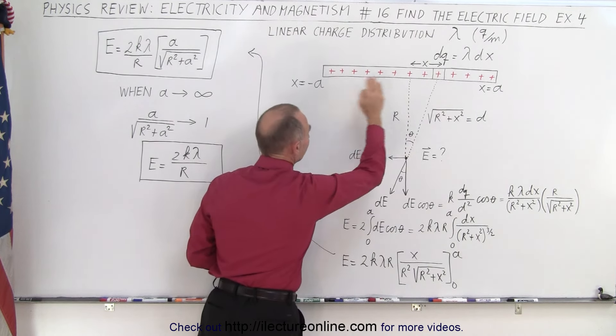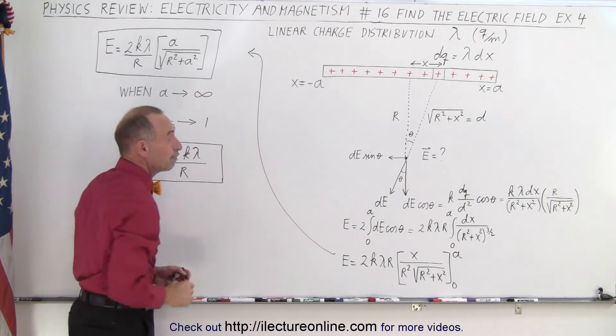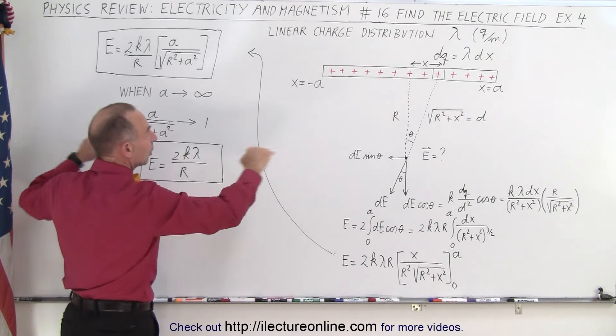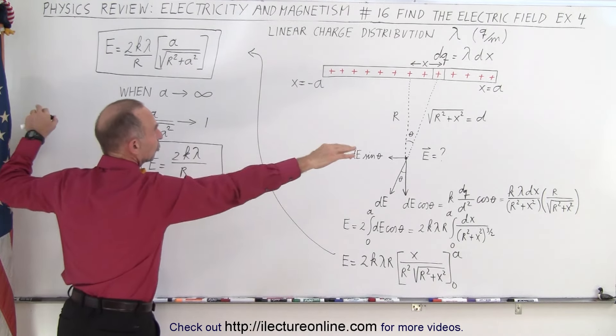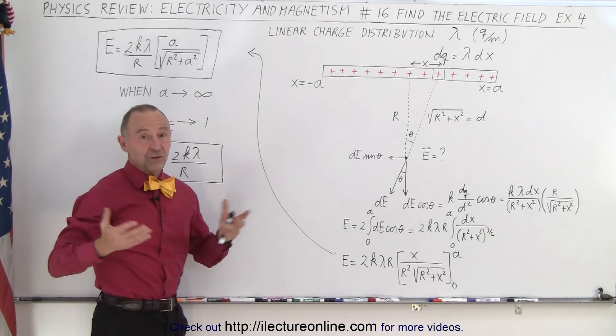So that's the electric field at some point from a linear charge density when the point is placed at the middle and the length of the charge density is from minus a to a and the distance away is r. Now what happens when we let a go to infinity? What if we have an infinite charge distribution, a very long length?